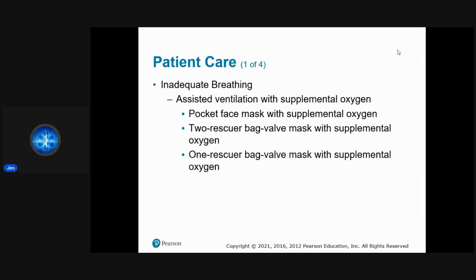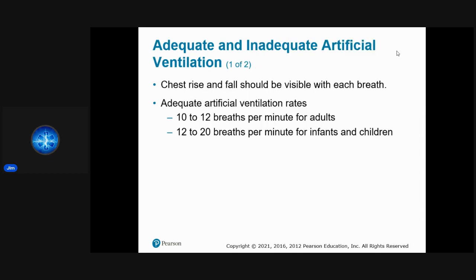For inadequate breathing we assist with ventilation using supplemental oxygen. The three methods are a pocket mask, two-rescuer BVM, or one-rescuer BVM. The best option is the two-rescuer bag valve mask with supplemental oxygen. Signs of adequate artificial ventilation: visible chest rise and fall with each breath, equal on both sides, at a rate of 10–12 for adults and 12–20 for infants and children.